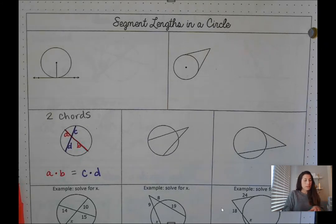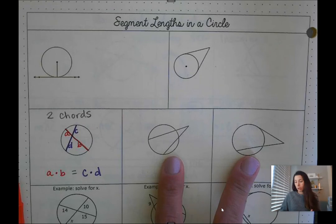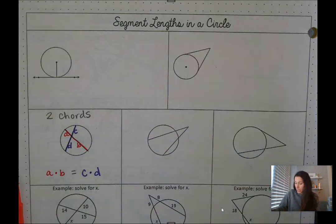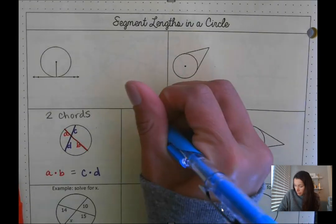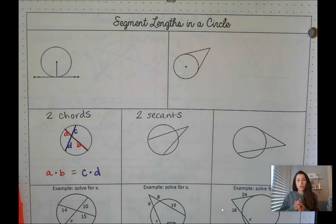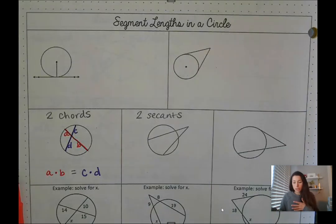In lesson eight we were looking at the segment lengths of circles that went outside of a circle. So what we have here in this diagram is we have two secants. Remember the difference between a secant and a chord is that a secant will actually go outside of the circle as well.